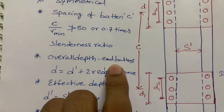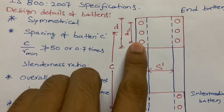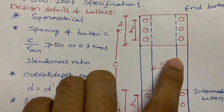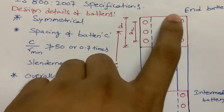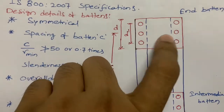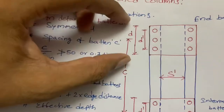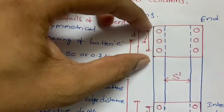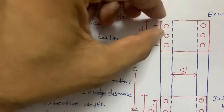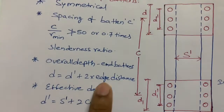After that, overall depth of end battens. The end batten is connected to the end of the channel section — if this is one channel section and this is another channel section placed back to back, the end batten connects them. While calculating this depth, I consider it as 'd', which is the overall depth of the batten plate, equal to d' plus two times the edge distance. d' is the distance from fastener to fastener.